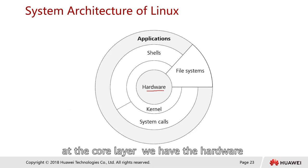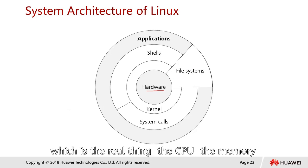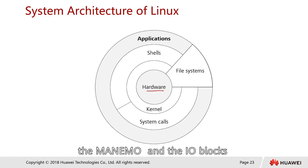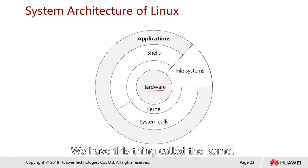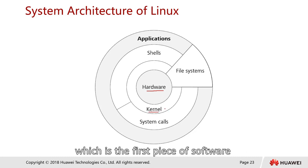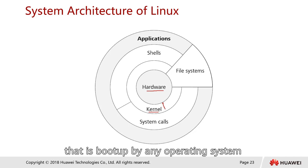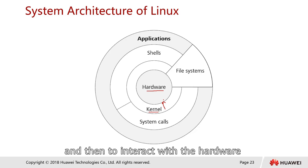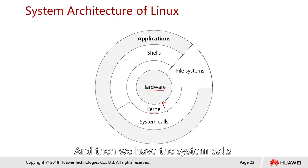This is the architecture of Linux. At the core layer we have the hardware — the CPU, memory, motherboard, and I/O buses. On top of that is the kernel, which is the first piece of software booted by the operating system and is used to interact with the hardware.